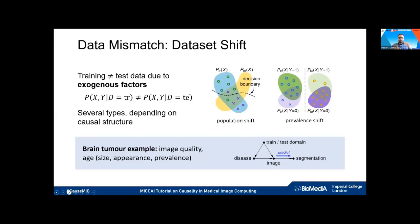Looking causally at the data generating process lets us disentangle different mechanisms that produce dataset shift. Returning to the brain tumor segmentation example, if we acquired data with a high-resolution research scanner using mostly an adult population, and then apply the model to a more general hospital population, we'd expect differences in age distribution affecting disease prevalence, as well as brain size and appearance.